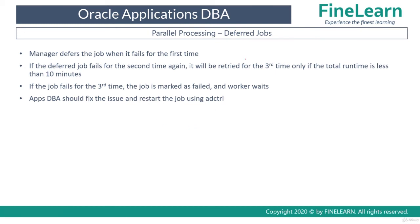There is also the concept of deferred jobs in parallel processing. Whenever a particular job fails for the first time, it is called a deferred job. If the same job fails for the third time, or the overall runtime of the job is more than 10 minutes, then the job is considered as failed.